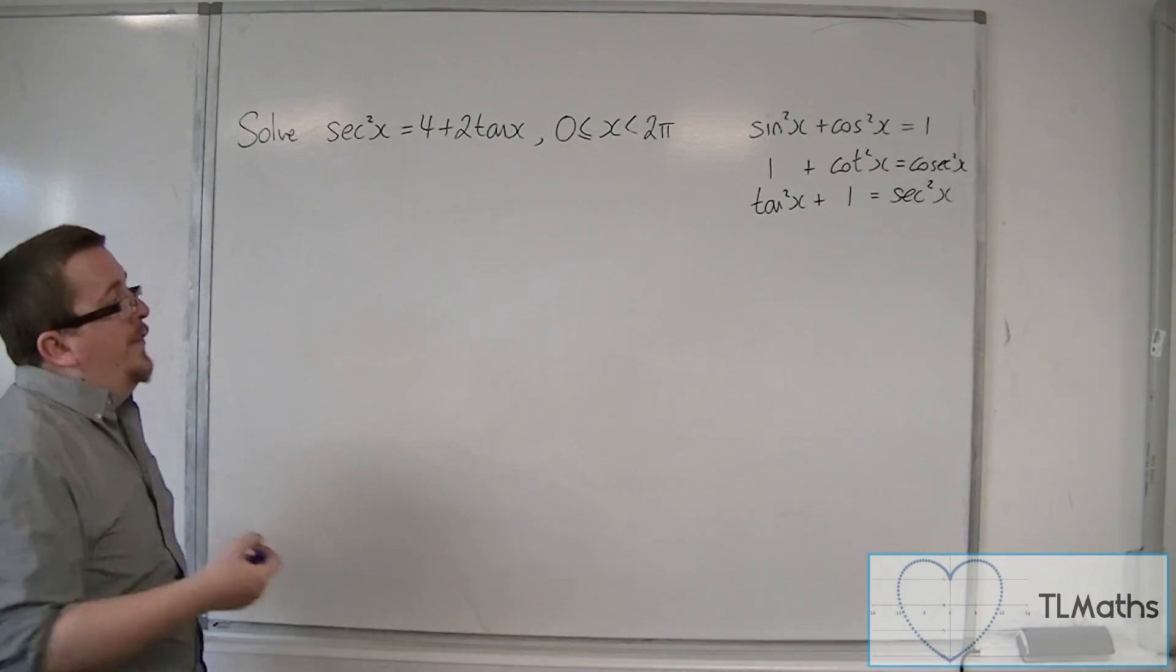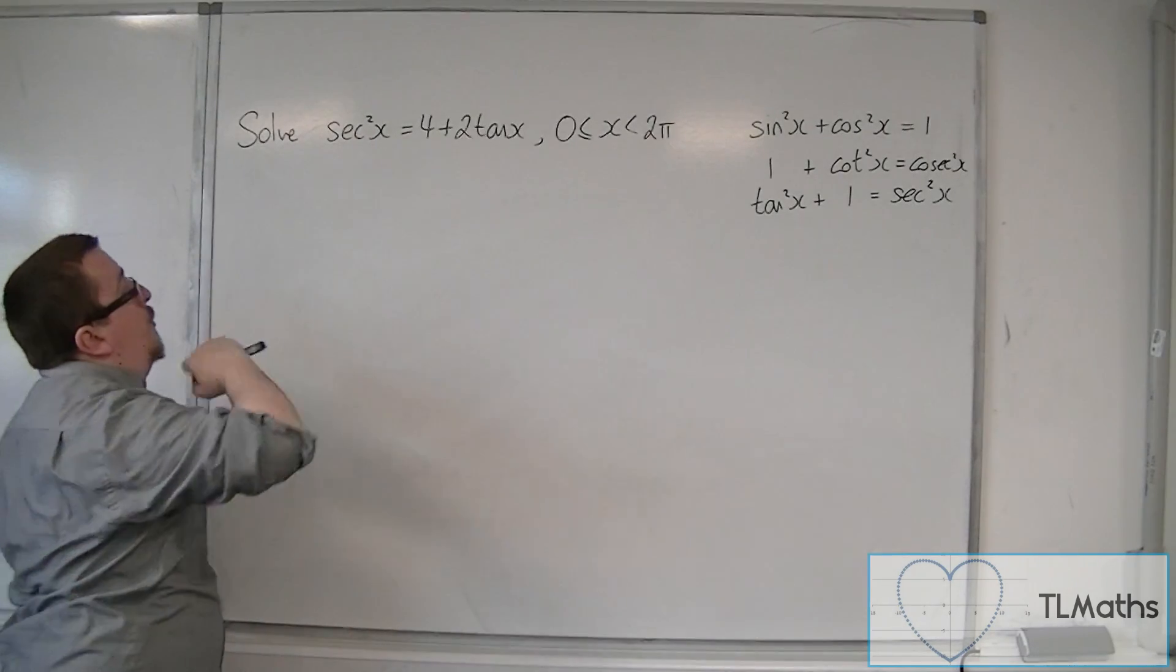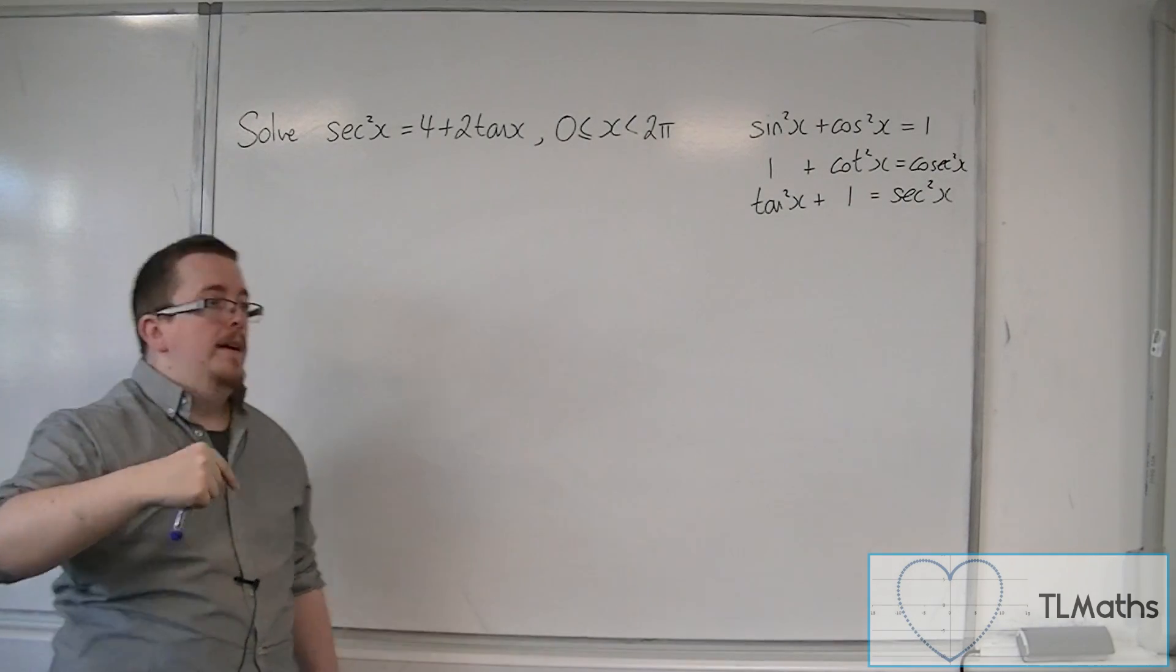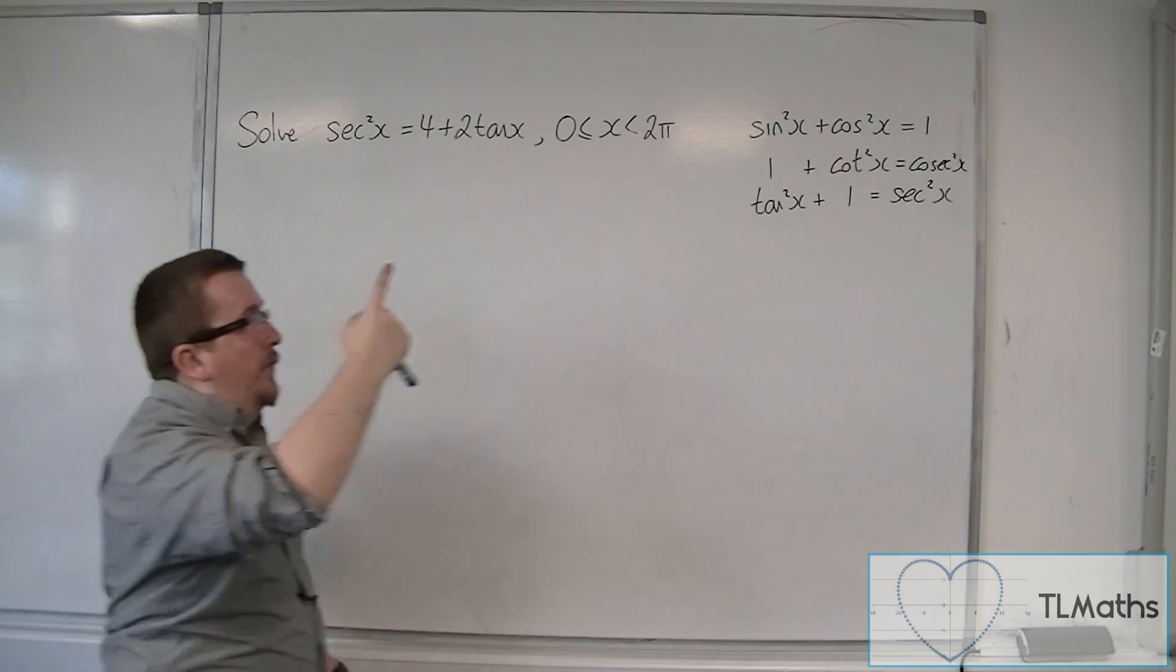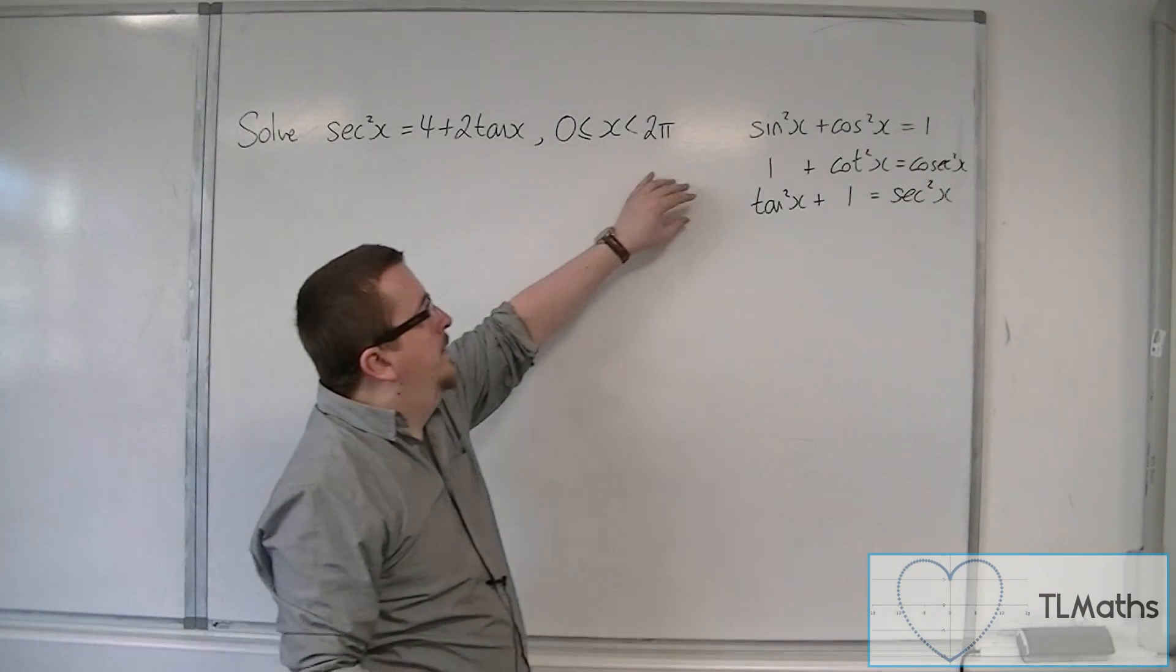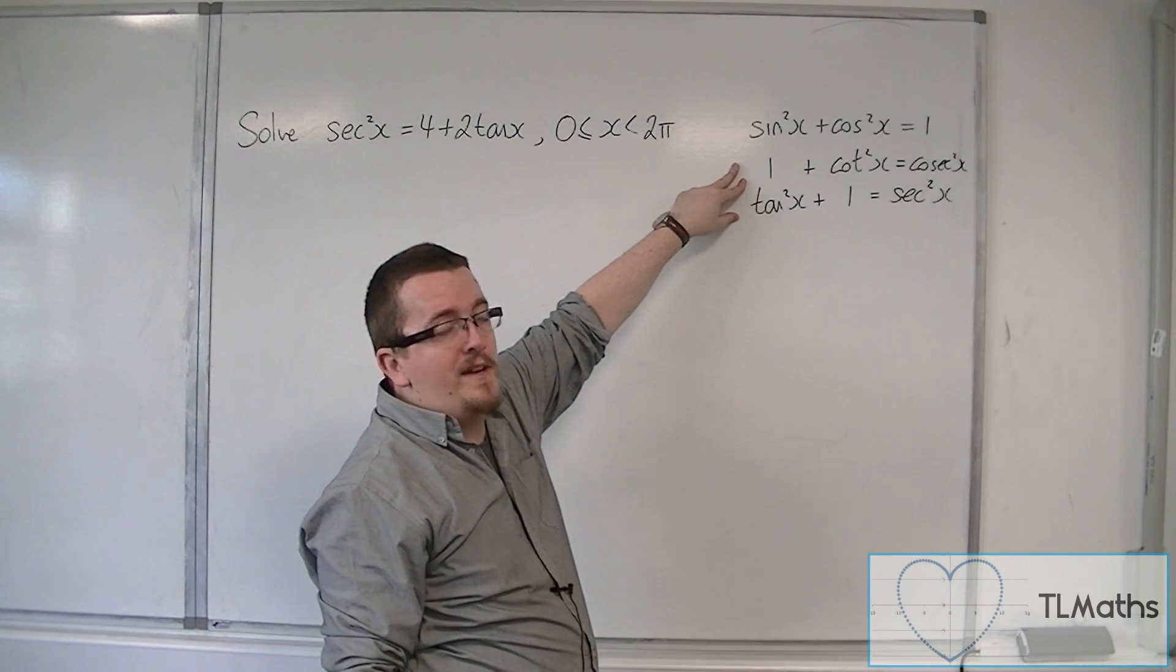So the first thing to do is to think, look for a trig function there that is squared, because we have squareds for each of our trig identities inside these two equations, these two trig identities.